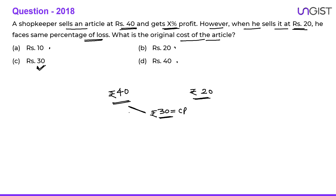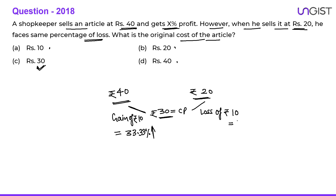When the article is sold for Rs.40, there is a gain of Rs.10. Similarly, when sold for Rs.20, there is a loss of Rs.10. So gain of Rs.10 out of a CP of Rs.30 means 33.33% gain, and loss of Rs.10 with respect to Rs.30 means 33.33% loss. So the percentages match. The options were straightforward, which is why we could solve this question very easily.